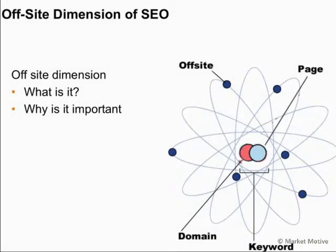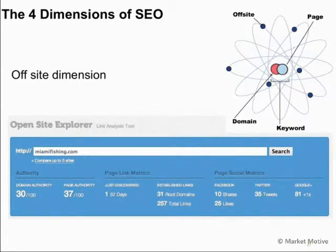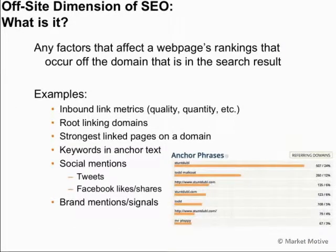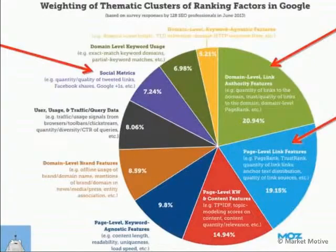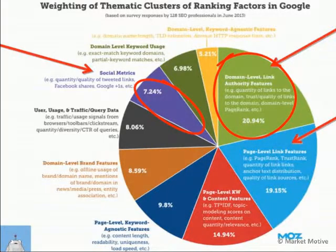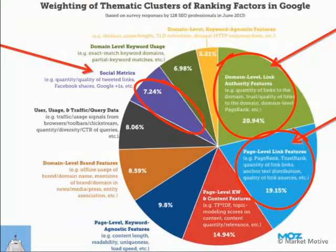The off-site dimension is any factors that affect webpages' ranking that occur off the domain. We can measure this with Open Site Explorer to see our domain authority or page authority. Some examples include inbound link metrics of quality and quantity, brand mentions or brand signals, social mentions, tweets, and Facebook likes — all of which can correlate to better search rankings. Off-site value remains very important: domain-level link authority features are still around 20% of the algorithm, page-level link features another 20%, making up almost half of the algorithm in link-based or off-site metrics.